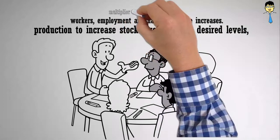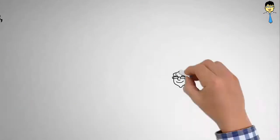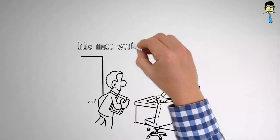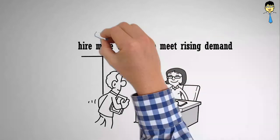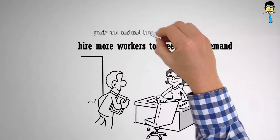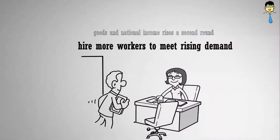Through the multiplier effect, higher income induces an increase in aggregate consumption. This leads firms to hire more workers to meet rising demand for goods, and national income rises a second round.